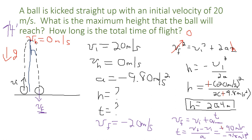The negatives cancel — which is good, because a negative time makes no sense. If you get a negative time, go back and verify your equations, or if the equations look good, verify your sign conventions. This gives us a total time of flight of 4.1 seconds.